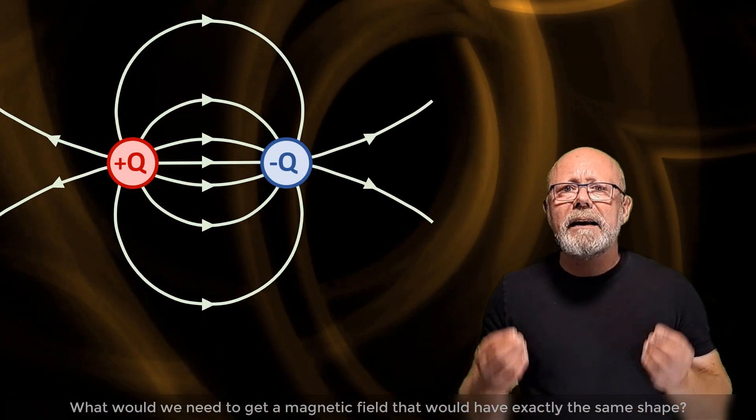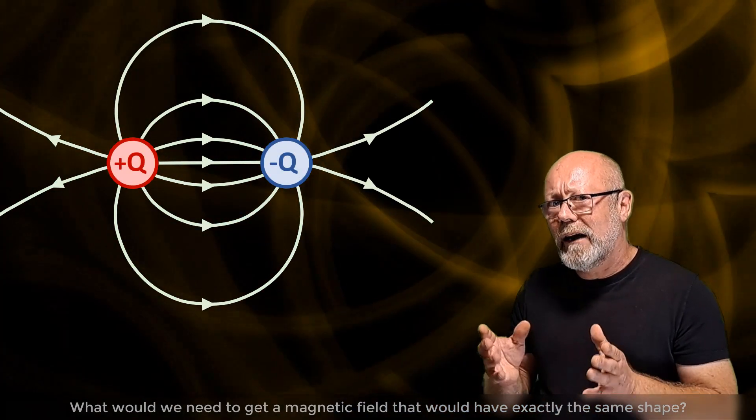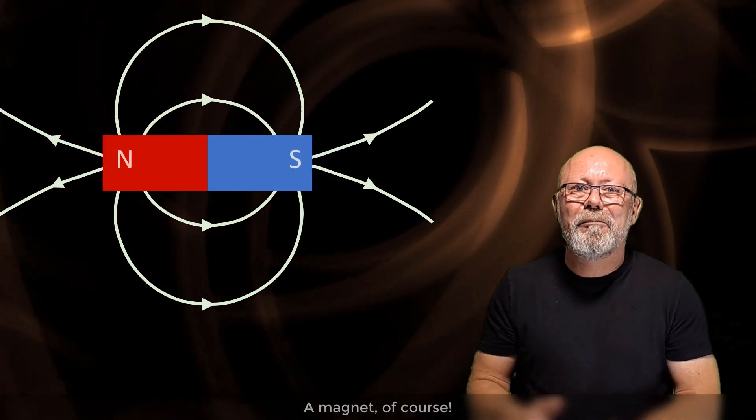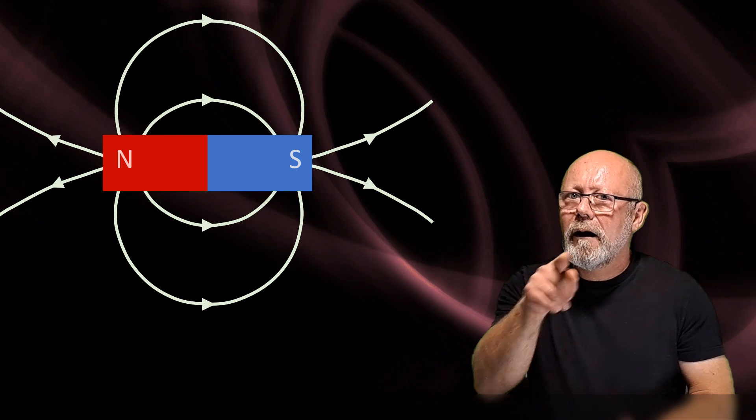What would we need to get a magnetic field that would have exactly the same shape? You got it. A magnet, of course. Or more accurately, a loop of current.